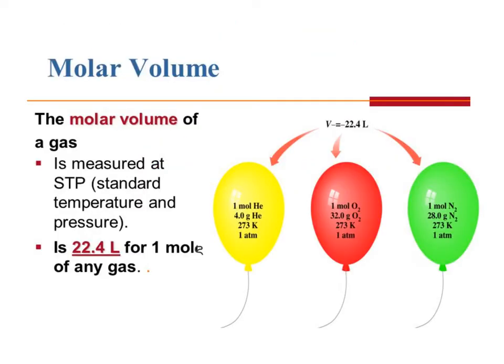The molar volume of a gas is always measured at STP, and it's 22.4 liters for one mole of any gas. For instance, I have one mole of helium — I know that weighs 4 grams. How do I know that? Because that's its molar mass; we get that from the periodic table.